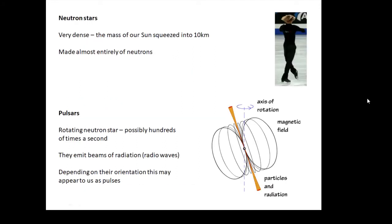Let's talk about neutron stars. Neutron stars are very dense. Imagine the mass of our Sun squeezed into 10 kilometers. They are very dense. I believe if you got the stuff that a neutron star is made of the size of a matchbox, it would be about 10 billion tons. It's made almost entirely of neutrons.